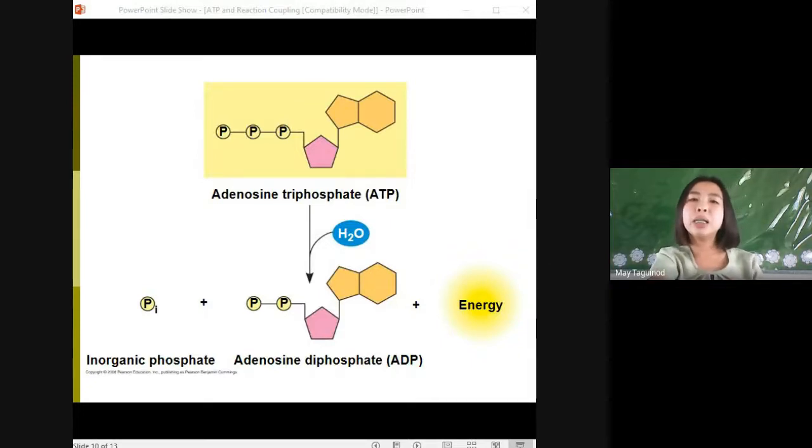The bonds between the phosphate groups of ATP can be broken by hydrolysis, the application of water. Energy is released from ATP when the terminal phosphate bond is broken. This third phosphate bond contains lots of energy. This release of energy comes from the chemical change to a state of lower free energy, not from the phosphate bonds themselves.